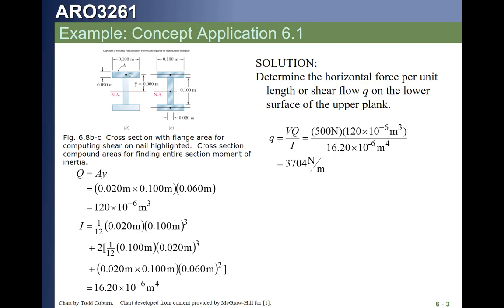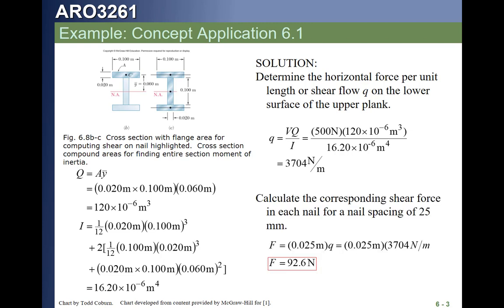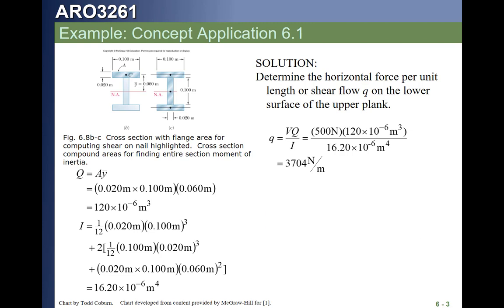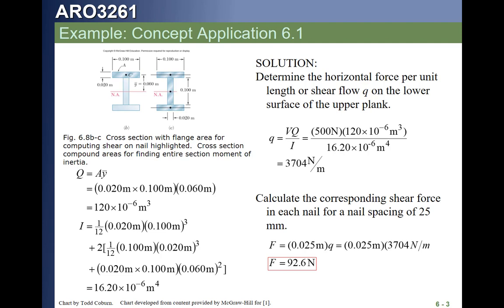Here's how it works. We calculate the I as you see in the lower left. We calculate the Q. We see that the Q feeding it is 0.1 times 0.02 times, in this case, 0.06. That gives us the Q. VQ over I gives us the newtons per meter holding the two segments together, and then multiplying by the spacing gives us the total force.